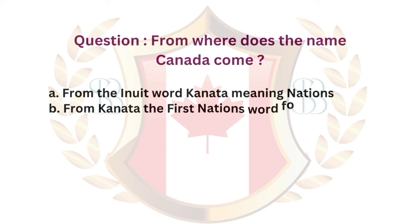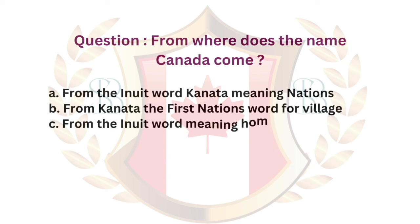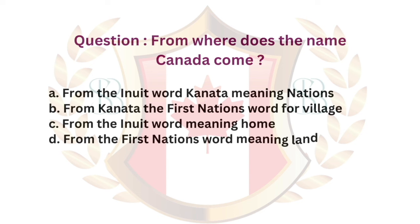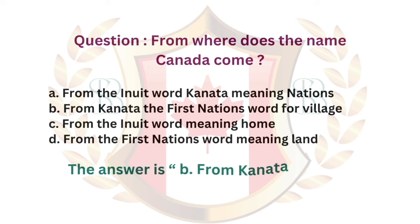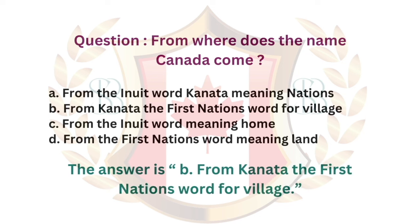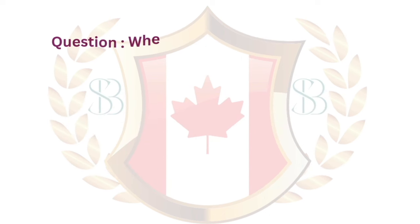Question. From where does the name Canada come? a. From the Inuit word Kanata meaning nations. b. From Kanata, the First Nations word for village. c. From the Inuit word meaning home. d. From the First Nations word meaning land. The answer is b. From Kanata, the First Nations word for village.